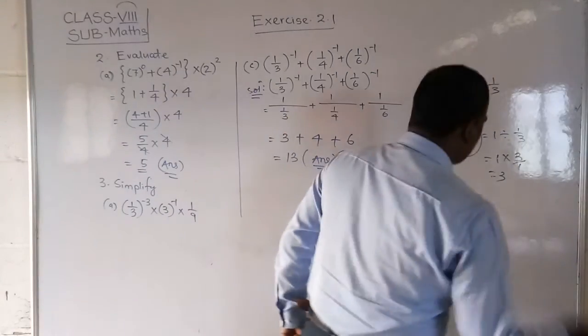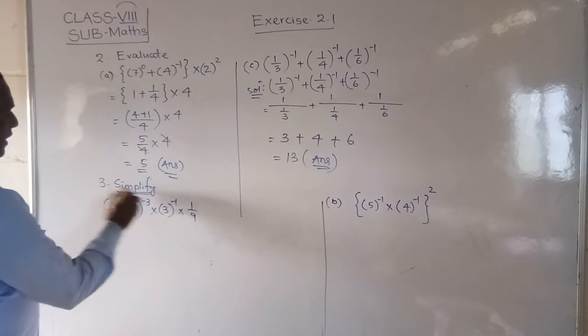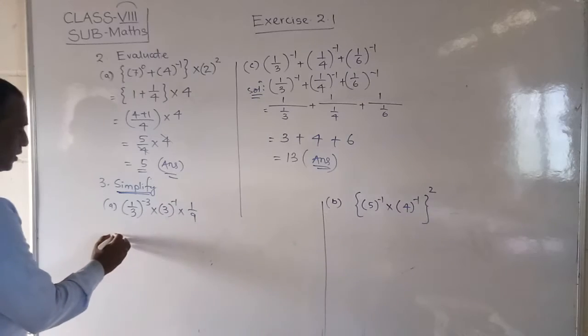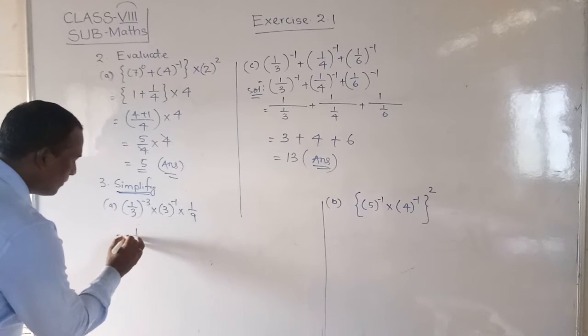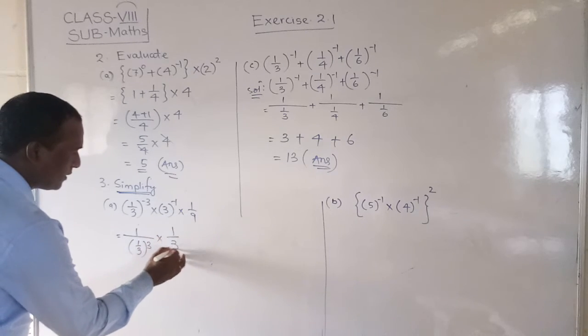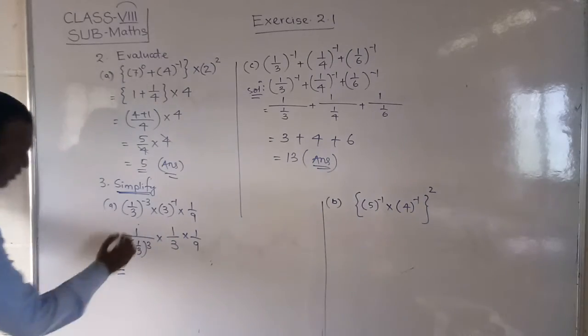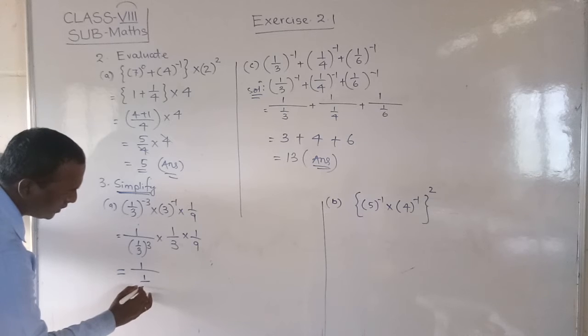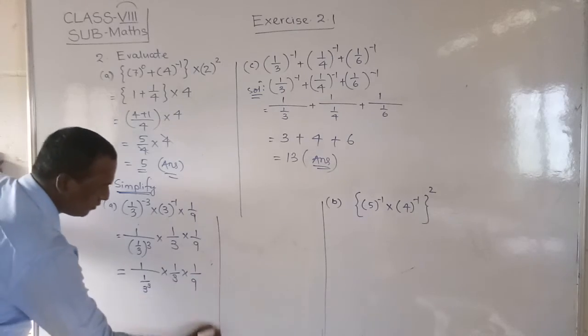Next, we can go for the third bit. Again, you have to solve. Here given that the simplified third bit, you observe. 1 by 3 to the power minus 3, into 3 to the power minus 1, into 1 by 9. Observe here, the power is negative. So what do you have to do? You have to make it positive. So 1 by 1 by 3 to the power 3, into this is also negative, so 1 by 3, into 1 by 9. Now observe here, 1 by 1 by 3 to the power 3.